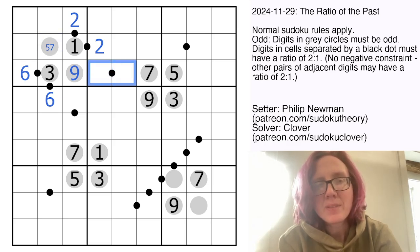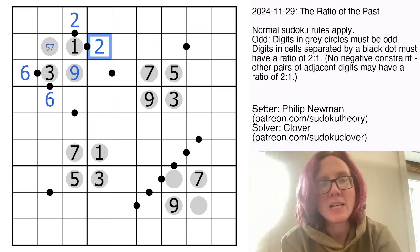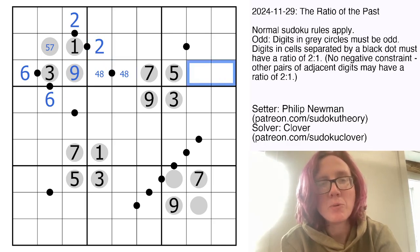Let's look at this black dot right here. It can't be 3 and 6, and it can't have a 2 in it. So it can't be 1 and 2, and it can't be 2 and 4. So the only other remaining option for a 1 to 2 ratio with Sudoku numbers is going to be 4 and 8. That leaves 1 and 2 for this pair.